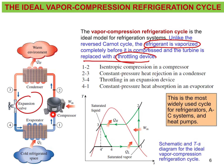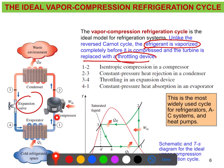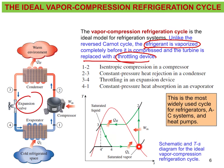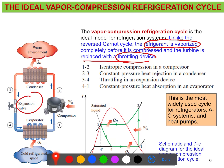At state 1, looking at the TS diagram, point 1 sits right on the saturated vapor curve — this is the vapor region, and the curve is the saturated vapor line. So the refrigerant, once vaporized, is at saturated vapor at state 1. This saturated vapor enters the compressor and is compressed isentropically, requiring work input, so temperature and pressure increase significantly.